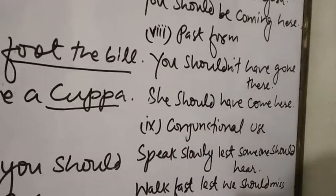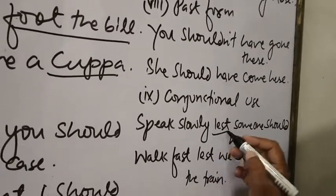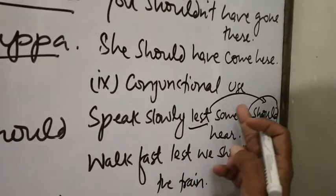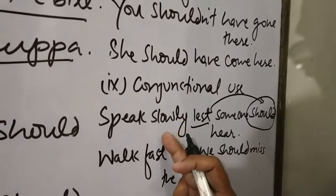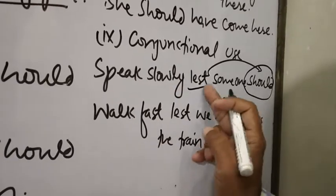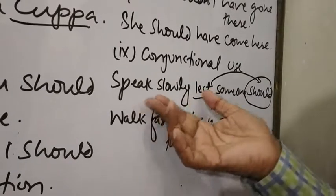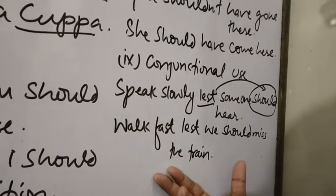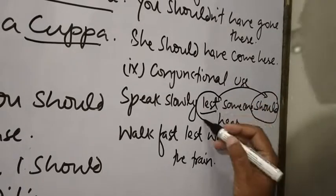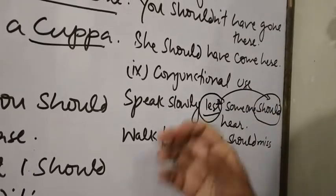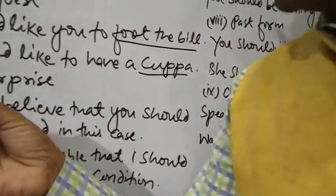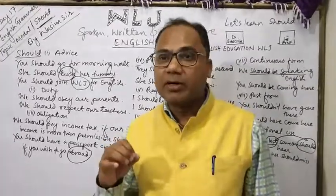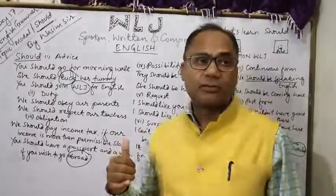The last use is the conjunction use. In a second clause, 'should' is used as a conjunction — this is a highly asked question in competitive examinations. For example: 'Speak slowly, lest someone should hear.' 'Walk fast, lest we miss the train.' So guys, those are the 9 uses of SHOULD we discussed today — the largest speaking modal in English grammar. Hope you understood better. Have a nice day!